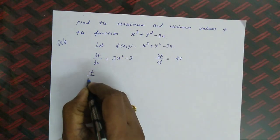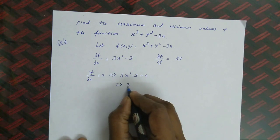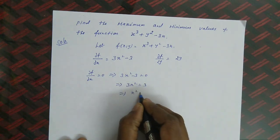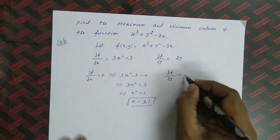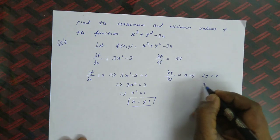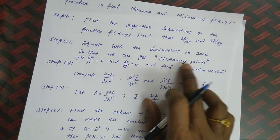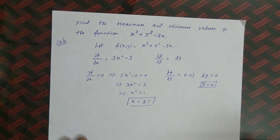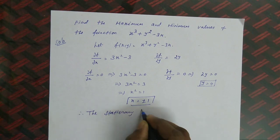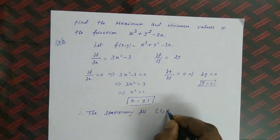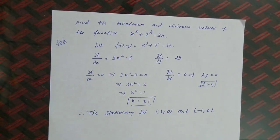Setting ∂f/∂x = 0: 3x² − 3 = 0 → 3x² = 3 → x² = 1 → x = ±1. Setting ∂f/∂y = 0: 2y = 0 → y = 0. Therefore the stationary points are (1, 0) and (−1, 0).